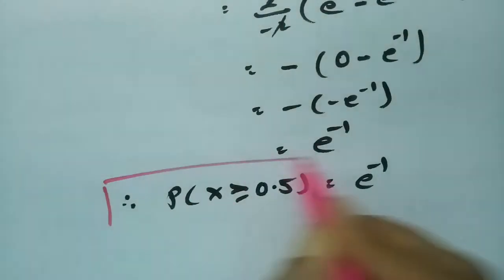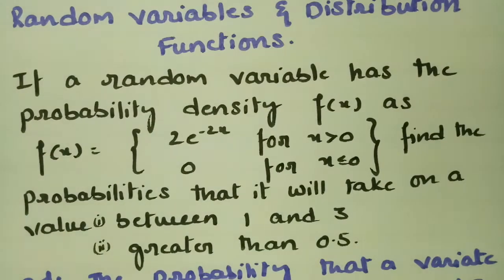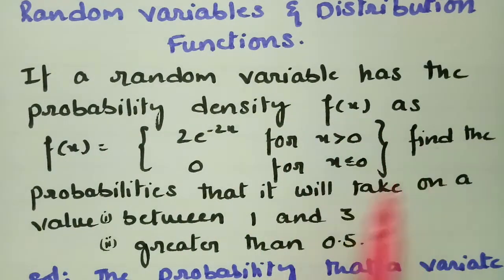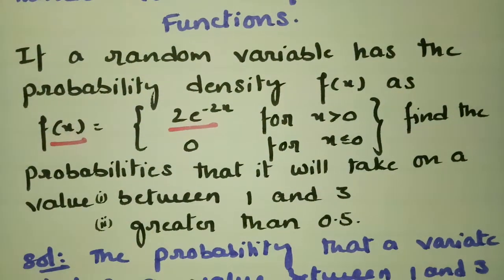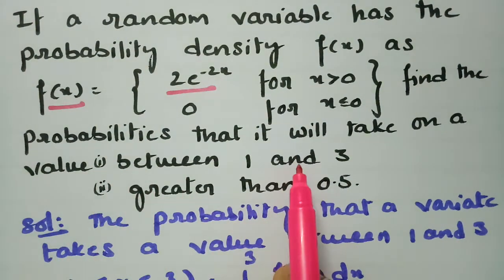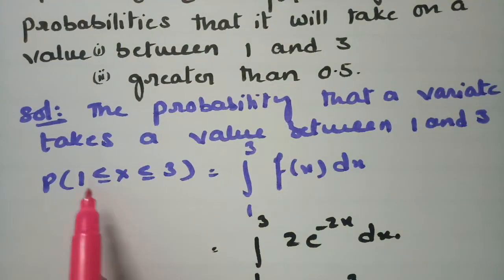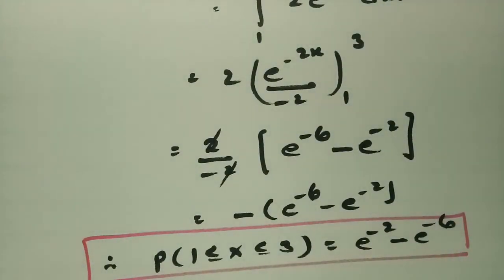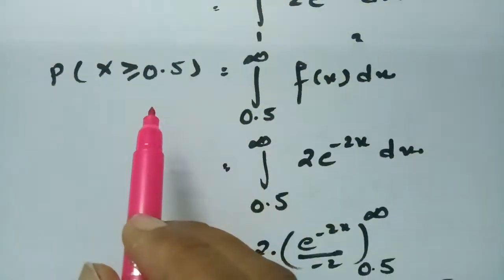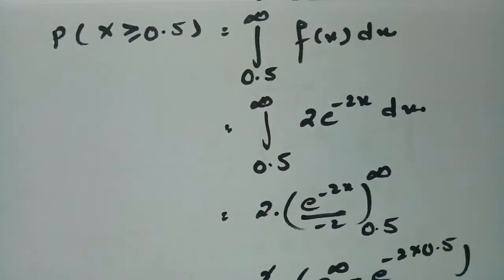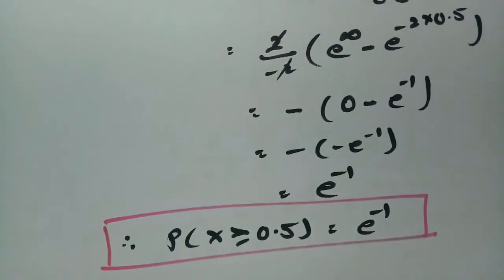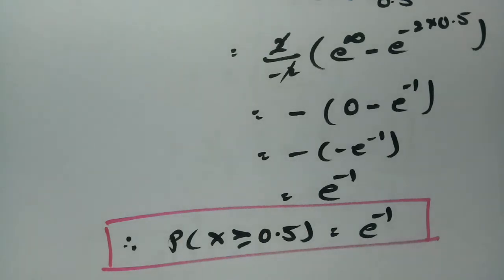This is how we solve these problems. To summarize: given f(x) = 2e^(-2x) for x positive and 0 otherwise, the probability between 1 and 3 is e^(-2) minus e^(-6), and the probability that x is greater than 0.5 is e^(-1). We integrate and substitute the upper limit minus the lower limit to get these answers.